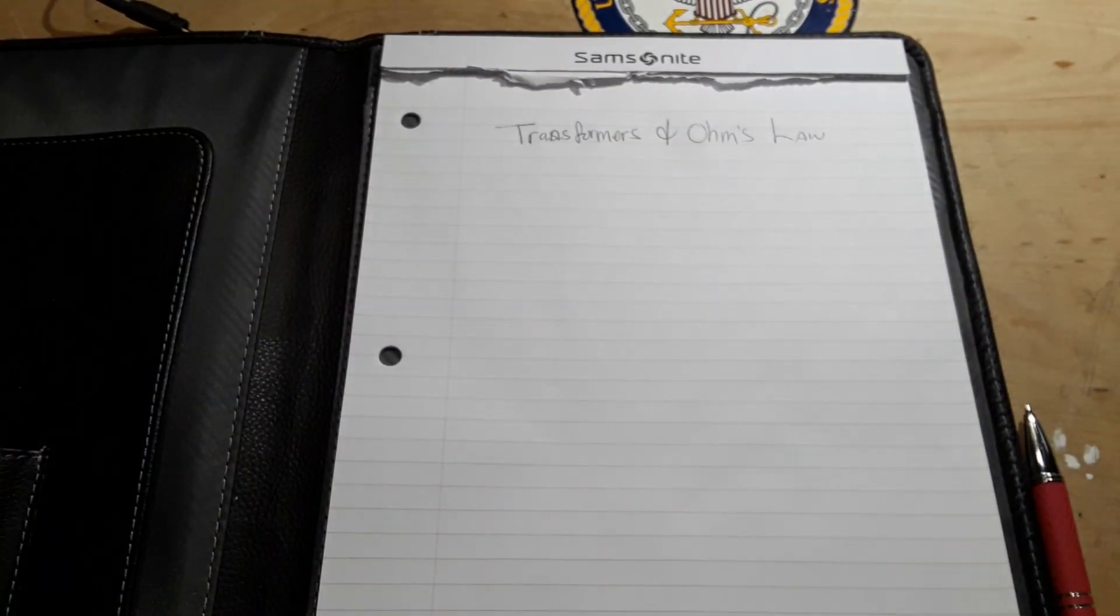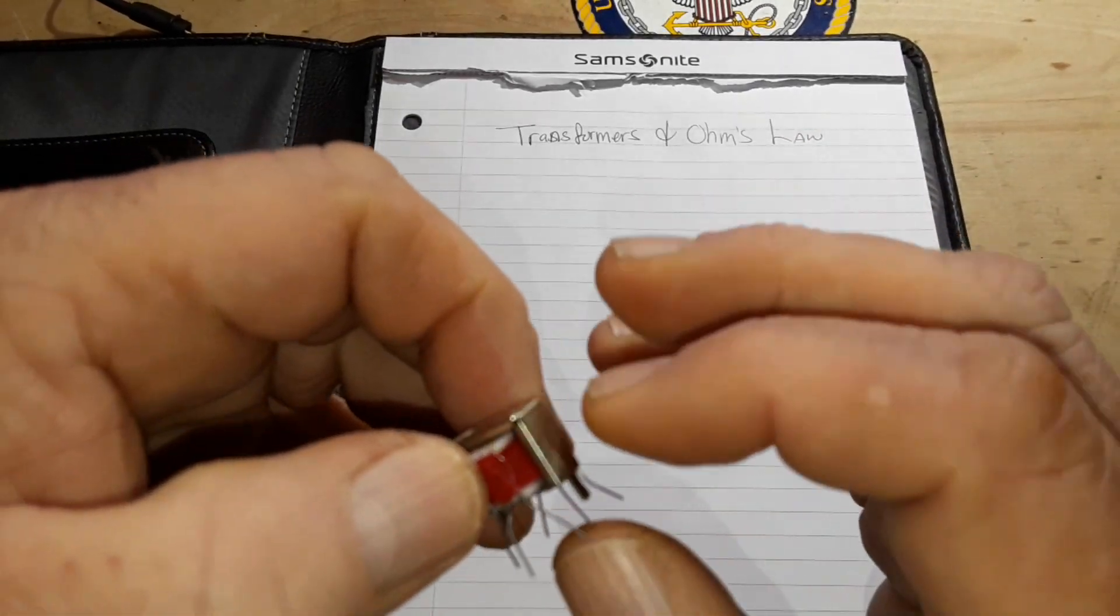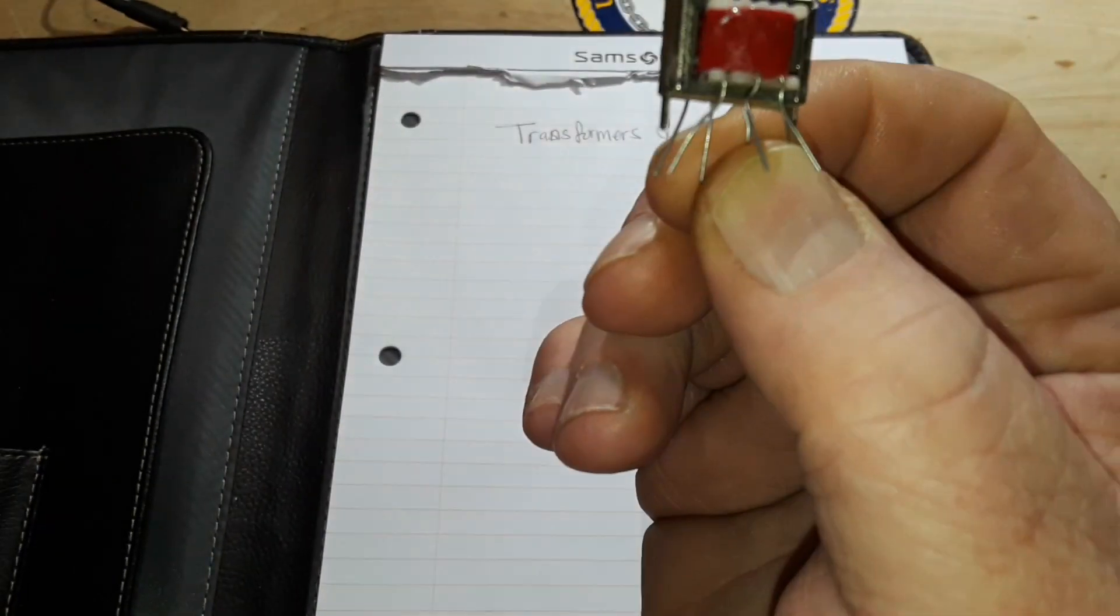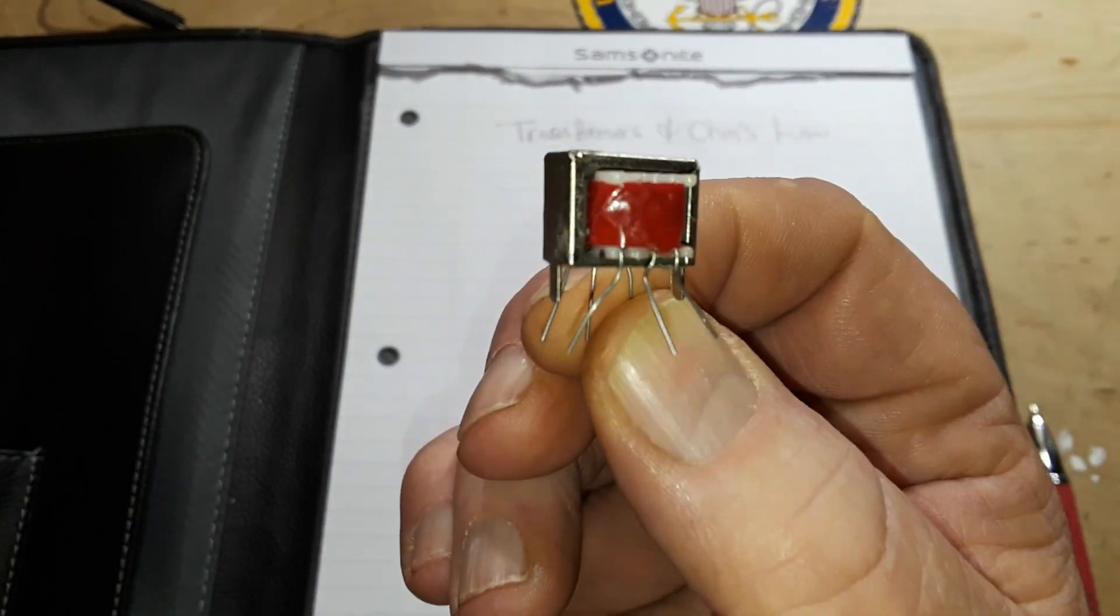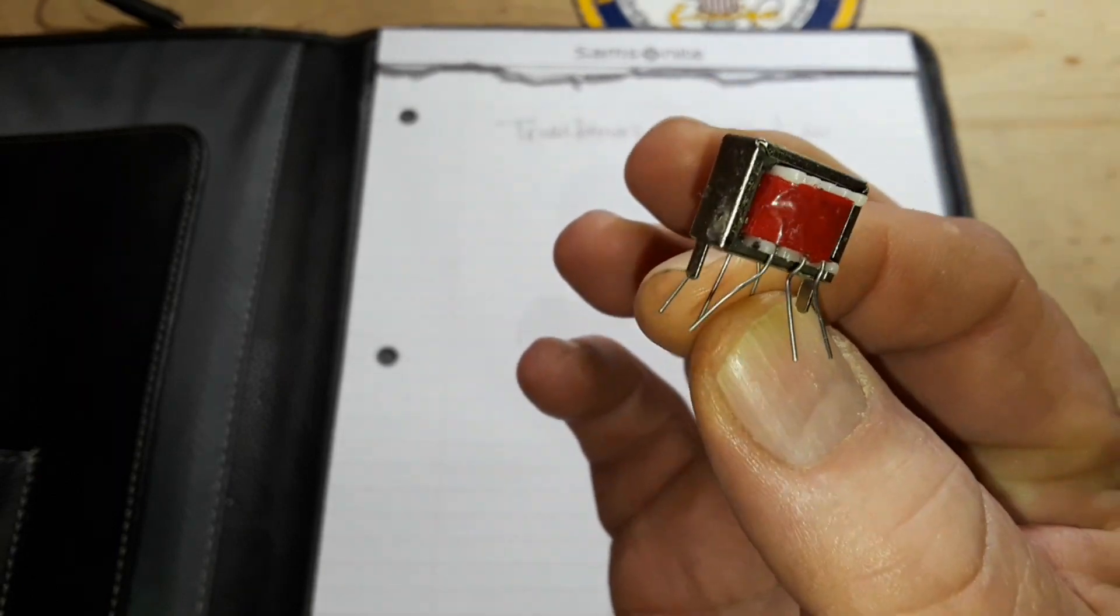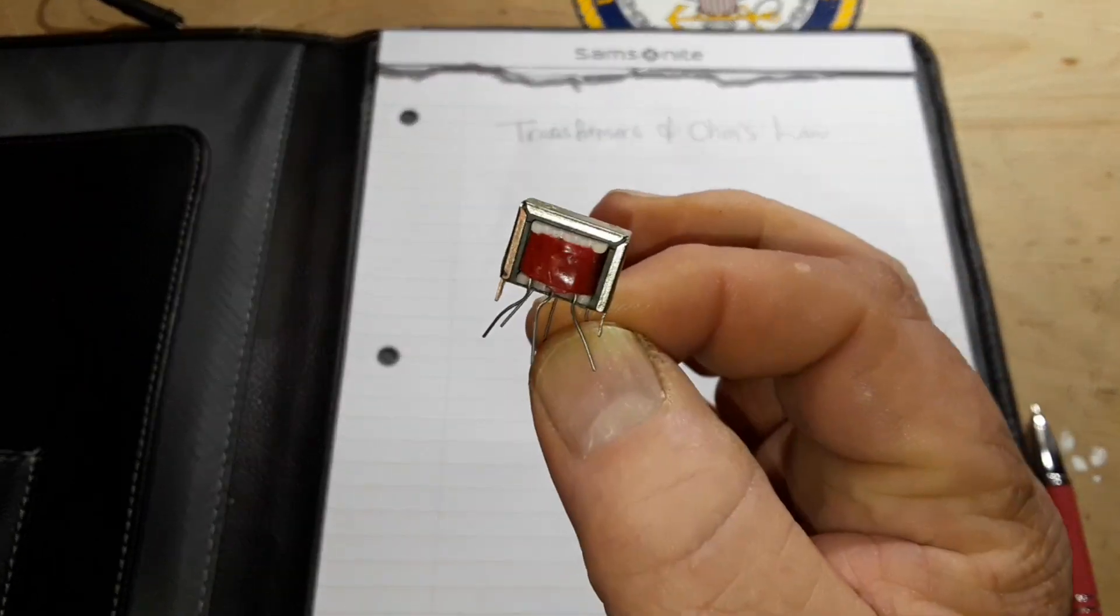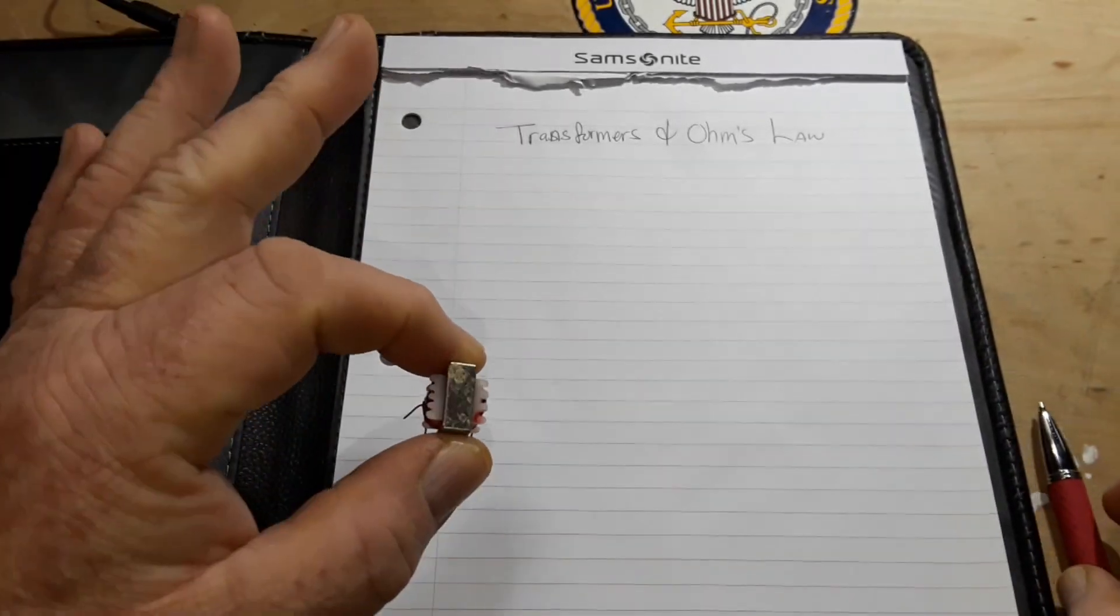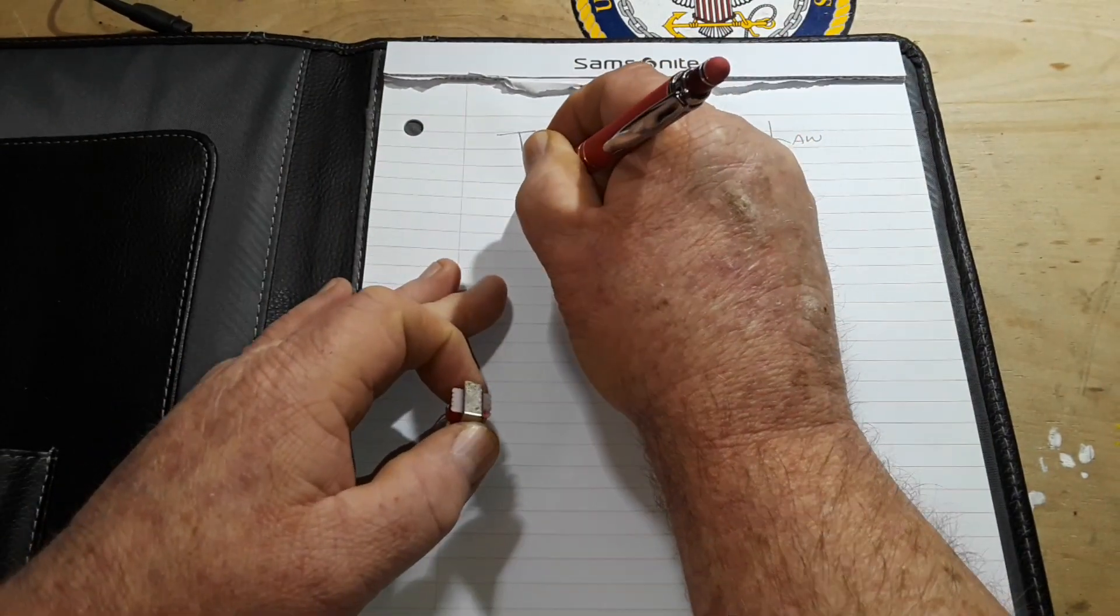So guys, we're going to talk about Transformers today. This is quite a tiny Transformer. Nothing much here. They play an incredibly crucial role in the world of electricity because they can increase or decrease voltage levels with great efficiency. So what is going on in here? Let me draw you a little diagram, and I can try and explain it to you.